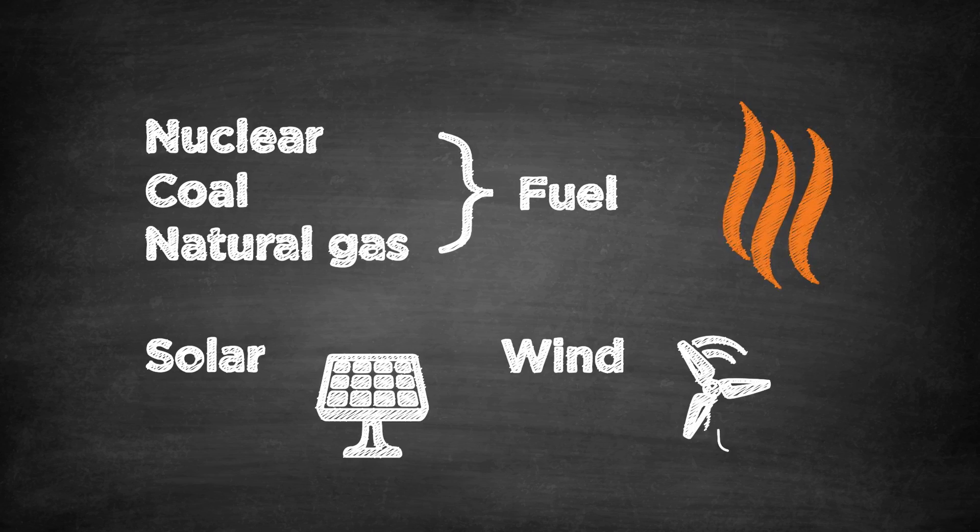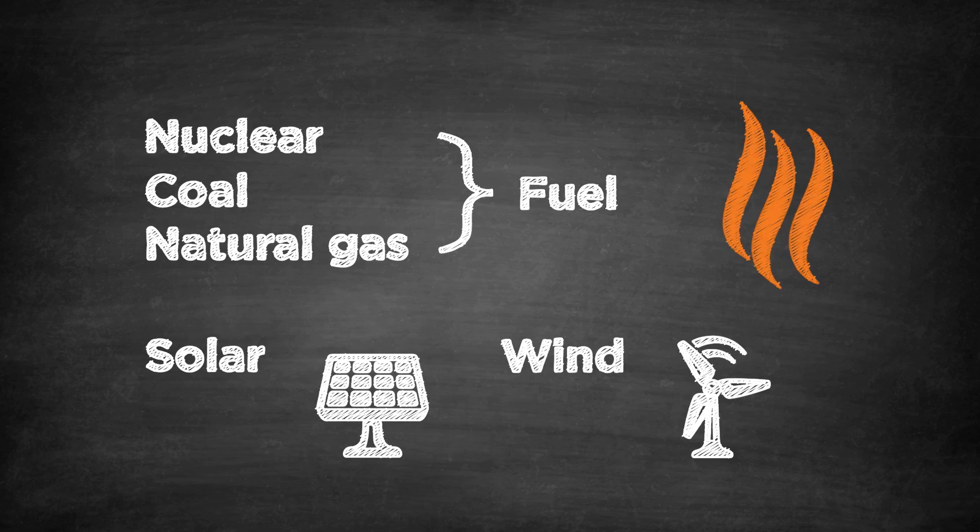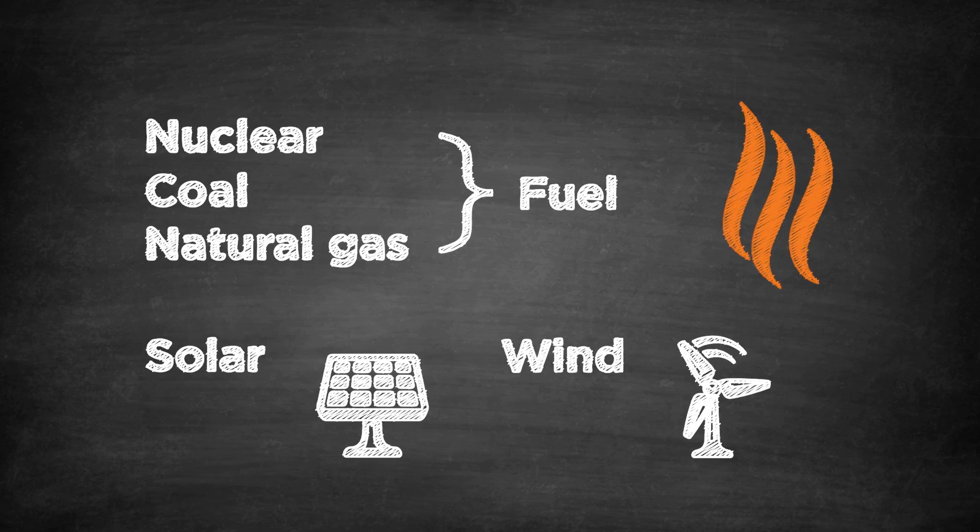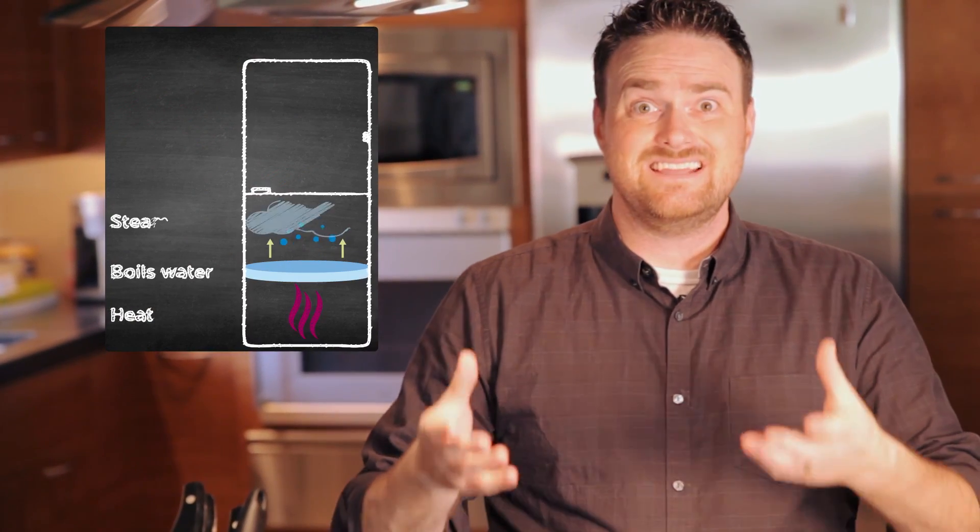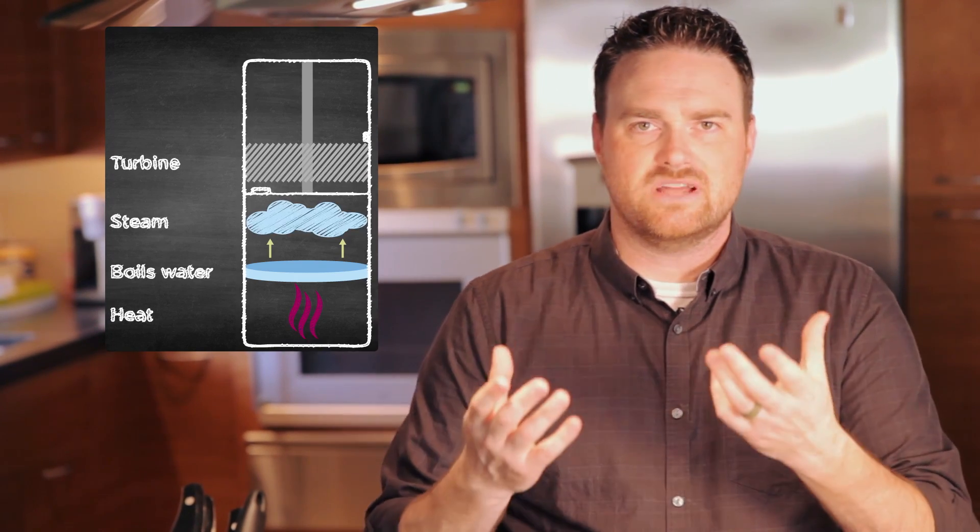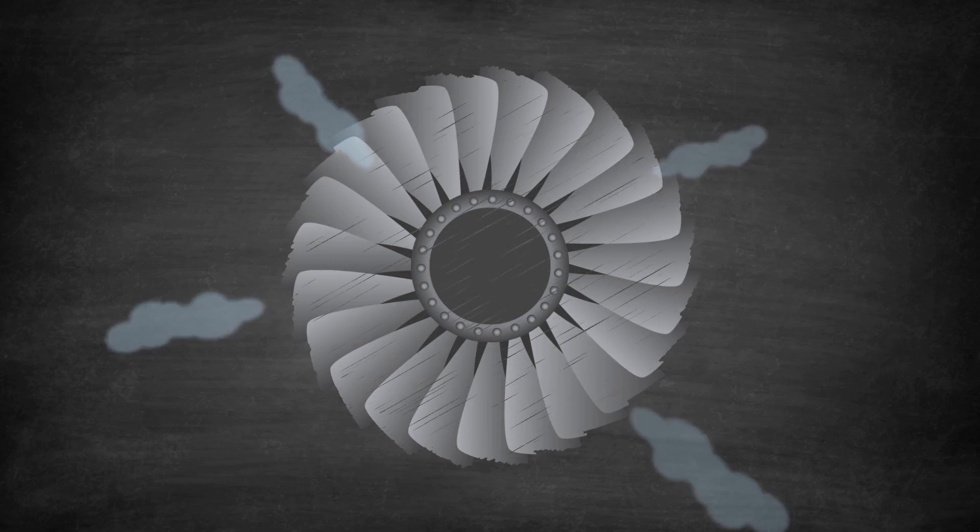Solar and wind are other generation sources, although the way they generate energy is a little different. What happens is those fuels create the heat, and that heat will boil water, which creates steam. That steam will push through a turbine, and when it pushes through that turbine, the turbine will start to spin just like a pinwheel.